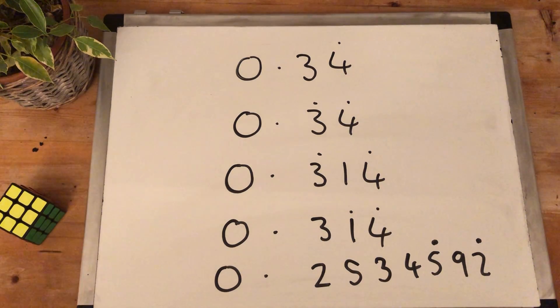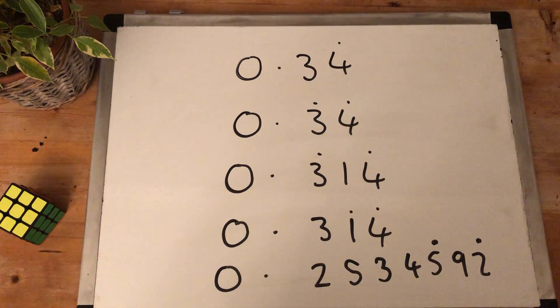Okay, now that we know how to read recurring decimals, we're able to start turning them into fractions. So come back for part two where we're going to learn how to do that.